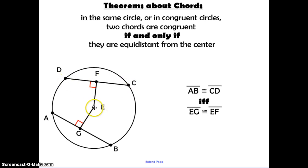Likewise, from point E to segment AB, the distance is the segment EG. So what this theorem says is these two chords, DC and AB, are going to be congruent if and only if this distance EF is exactly the same as that distance EG.